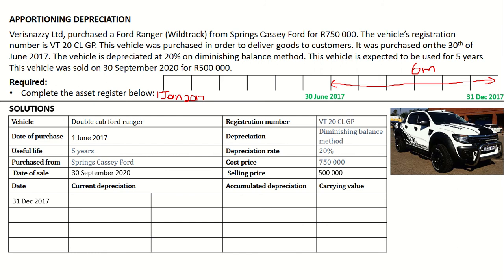That is why for the first year, when you calculate your depreciation on the 31st of December 2017, you will take the cost price of $750,000, multiply by 20%, and multiply that by 6 over 12. That is what we mean by apportioning — we are only calculating depreciation for the period over which we used the asset. The depreciation for the first year will be $75,000. Accumulated depreciation will be the same, and your carrying value will be $750,000 minus $75,000, giving you $675,000.